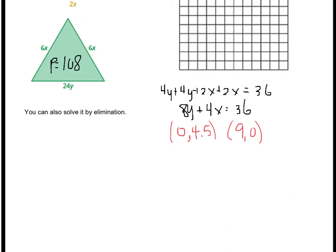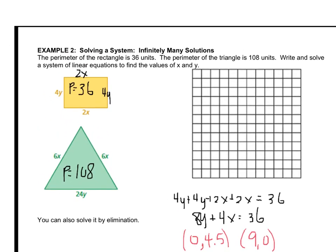Hopefully those are the two intercepts that you got. 0, 4.5, and 9, 0. If you didn't, and you don't know how we got those, then you need to come see me for help.